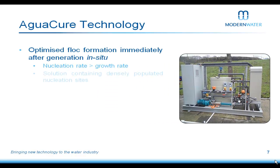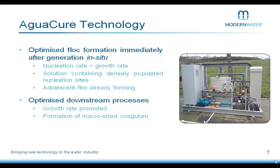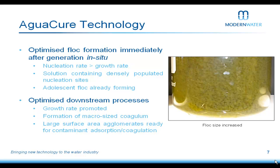What makes the Agwacure technology important? There's a key relationship between nucleation rate and growth rate. When forming floc, you want a very high nucleation rate, which creates a solution with a high concentration of floc — small, adolescent flocs that still need to mature. We focus on nucleation rate first, generating lots of sites that can actively form into floc. In the downstream process, we then promote growth rate, because we want as large a floc size as possible to maximise surface area for attracting contaminants. What we ultimately form are macro-sized coagulant flocs.